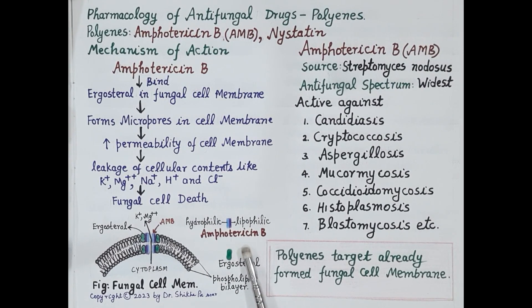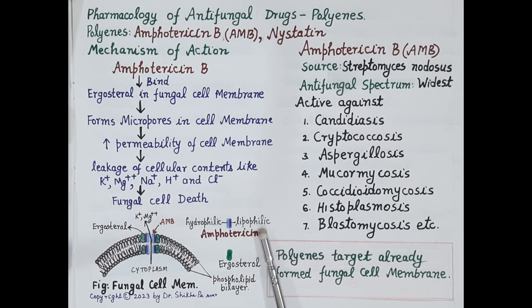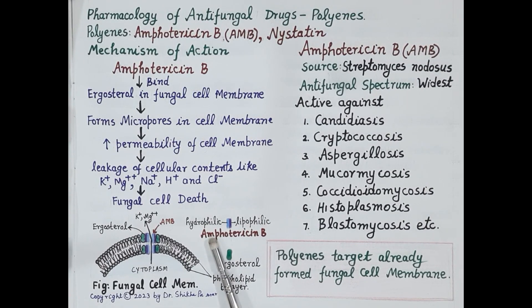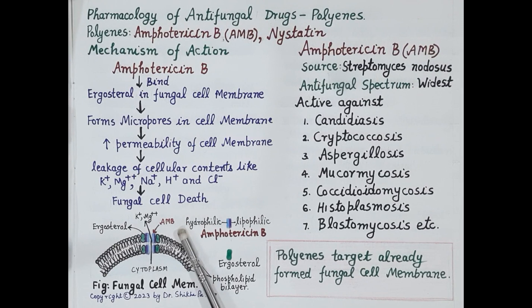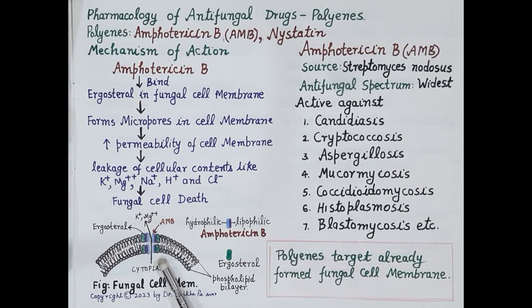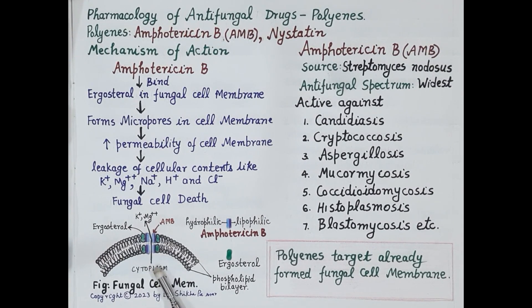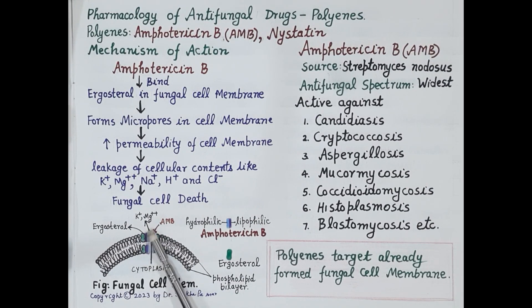This figure depicts the structure of amphotericin B. One side of the amphotericin B molecule is highly lipophilic, that is lipid soluble, while the other side is hydrophilic, that is water soluble. Polyenes like amphotericin B show high affinity for ergosterols and bind to ergosterols in the fungal cell membrane, forming micropores.